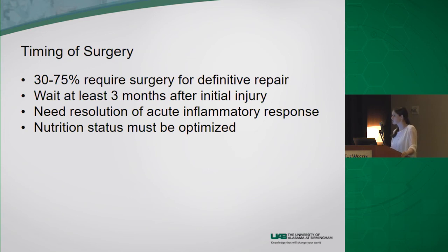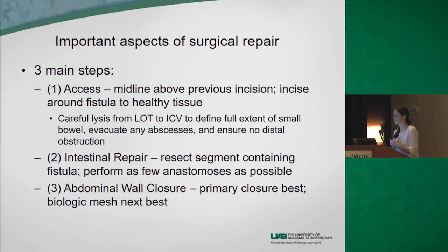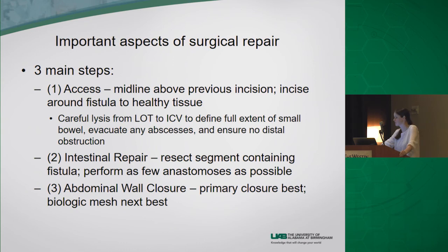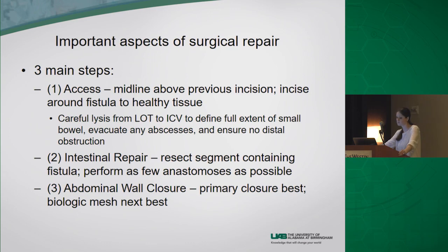When pursuing surgery, the three main steps are: first, gaining access — entering the midline above the previous incision or incising around the fistula to healthy tissue, performing careful lysis of adhesions from the ligament of Treitz to the ileocecal valve to define the full extent of the small bowel, draining retained abscesses, and confirming no distal obstruction. Second, intestinal repair — resecting the segment containing the fistula and performing as few anastomoses as possible, as primary wound closure alone often leads to recurrence. Third, closing the abdominal wall — primary closure is preferred, avoiding mesh unless necessary, in which case biologic mesh is the next best option.